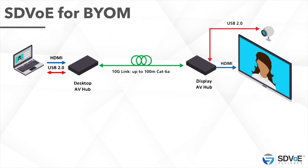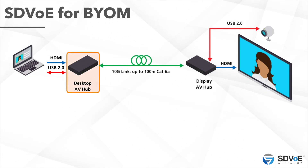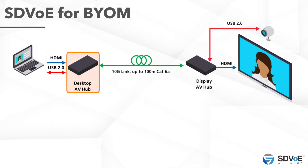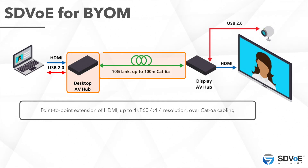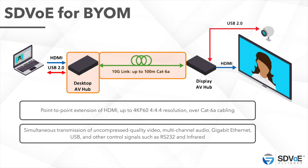Here's what it looks like using two SDVoE endpoints. On the desktop or tabletop we have the AV hub where you connect your laptop, with a couple of cables — one for HDMI and one for USB 2.0. We can extend video up to 4K P60 4:4:4 resolution over a single cat 6a cable, with simultaneous transmission of not only audio and video but other signals as well.